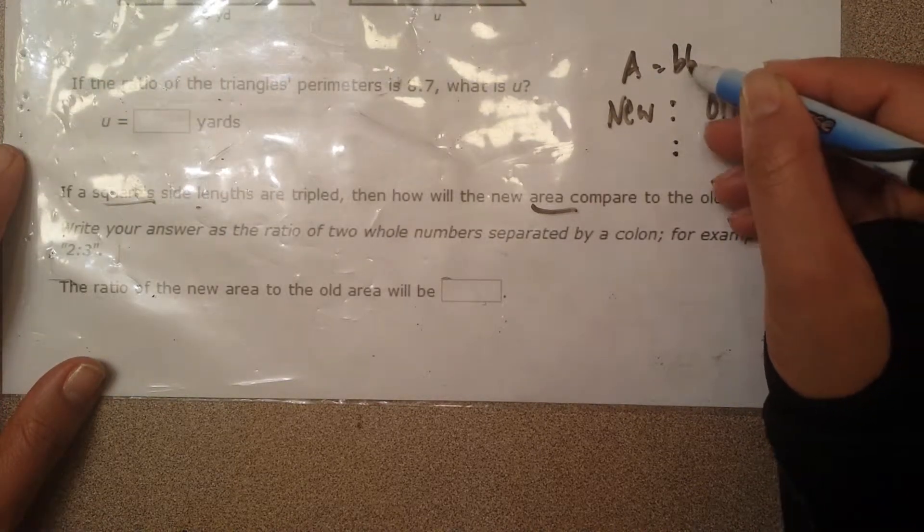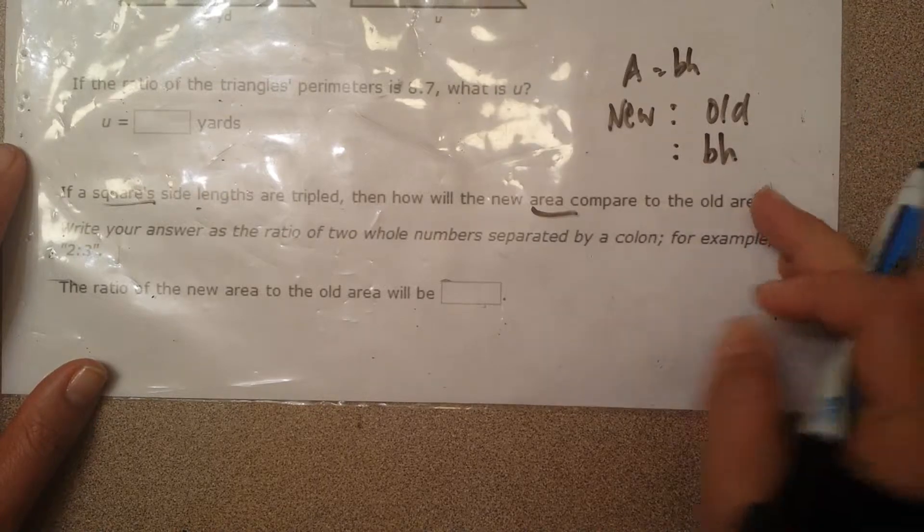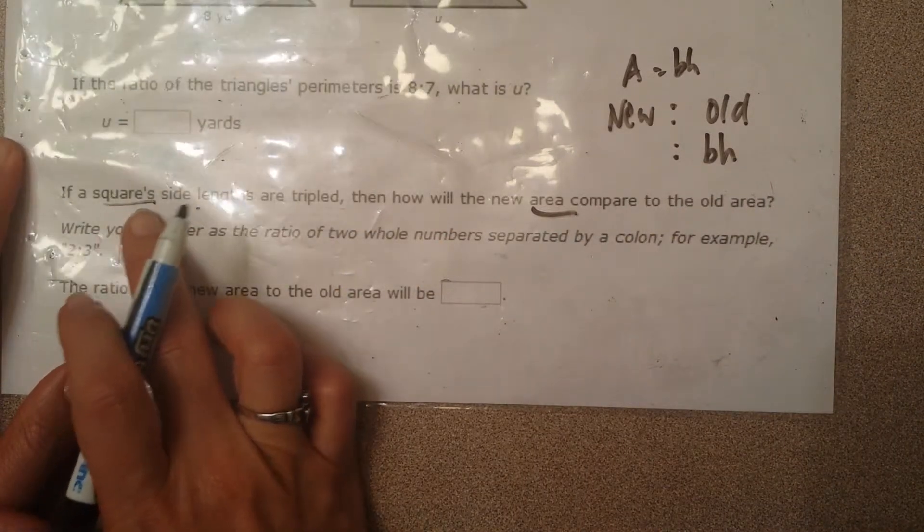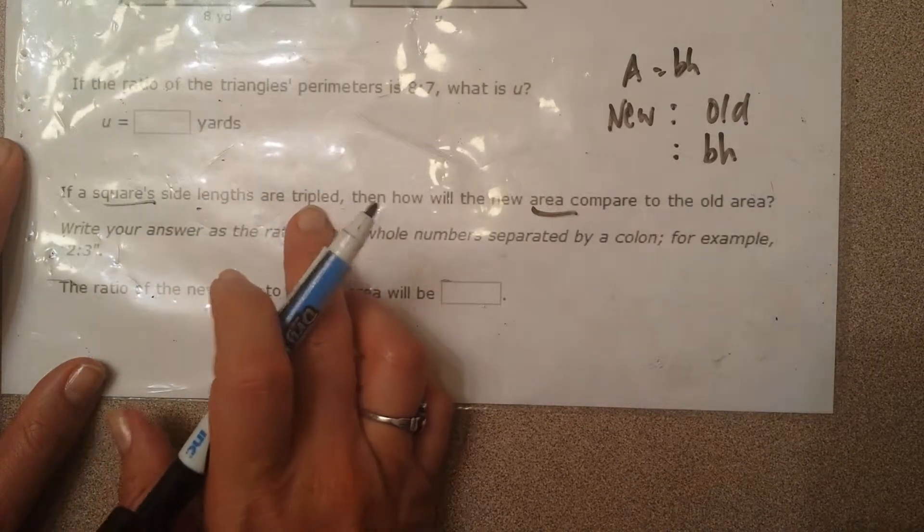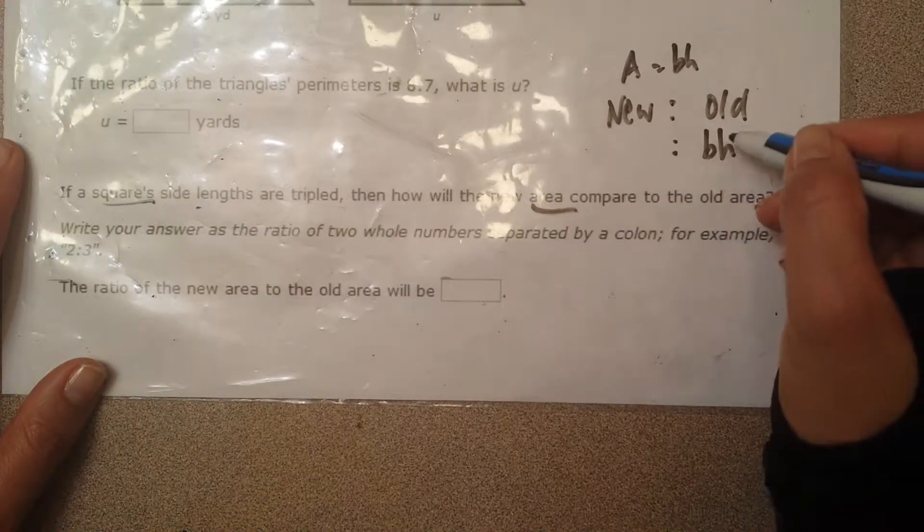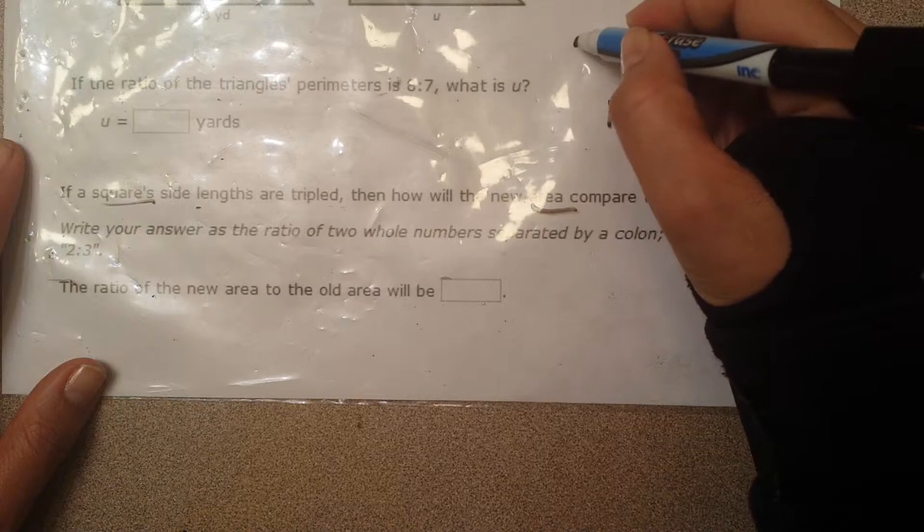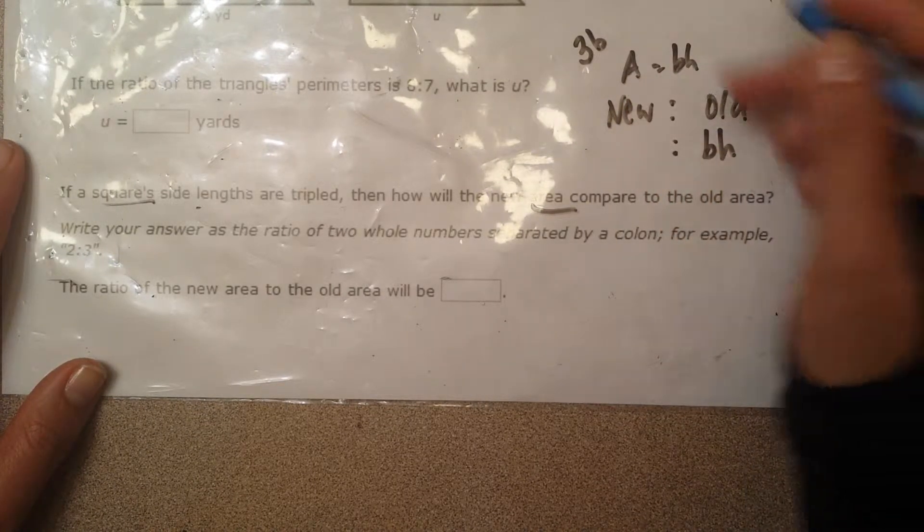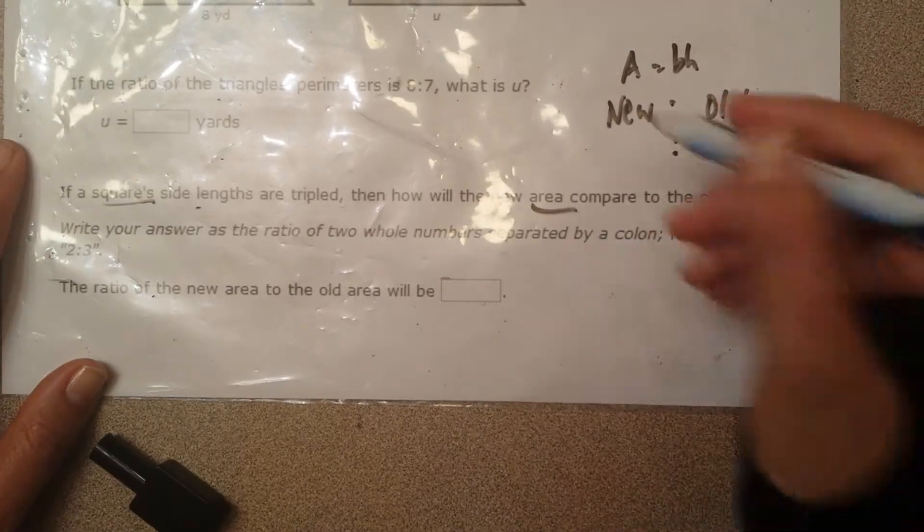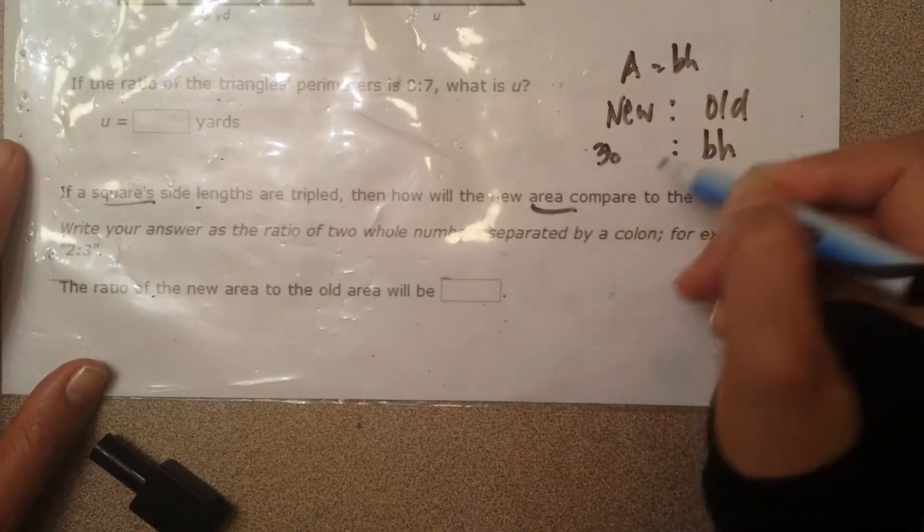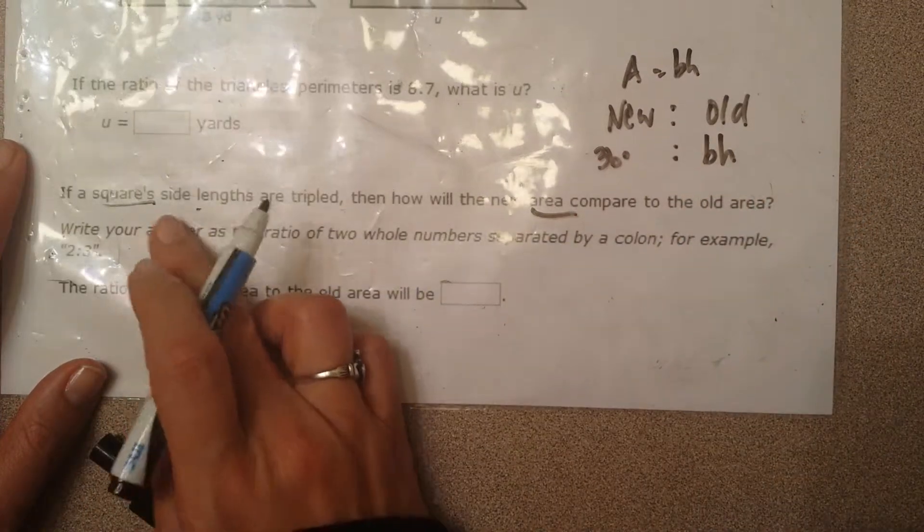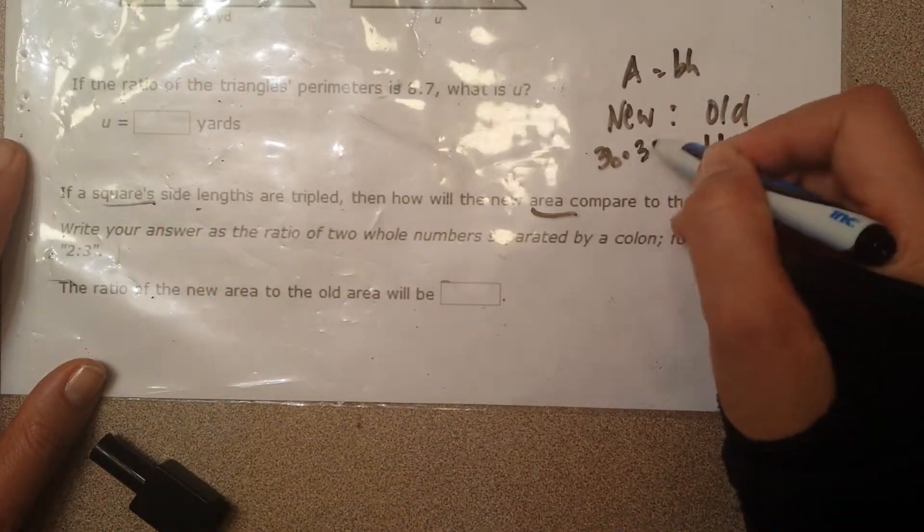The area of the old is going to be just base times height. Then what you're going to do before you write down the area of the new is do whatever they tell you. The square sides are tripled. The lengths are tripled. So we're going to triple the base. So I'm going to triple, which means I'm going to multiply this by 3. Actually, I'll just write it here. I'm going to triple the base and then multiply it by the height, which I'm also going to triple because it said the length. So I'm going to triple the height. So 3b times 3h is going to give me 3 times 3 is 9bh. And on this side I'll have bh.